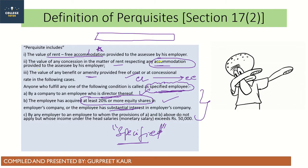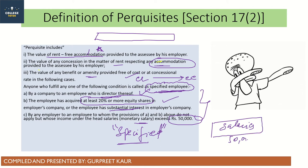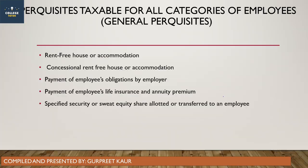The third condition is: even if an employee does not fall under the director or 20% shares category, if their monetary salary under the head of salary exceeds 50,000 rupees, they are also considered specified employees. Now, the first category of perquisites — taxable for all employees — includes RFA, i.e., rent-free accommodation, and concessional rates.